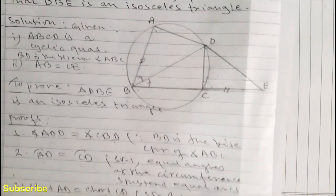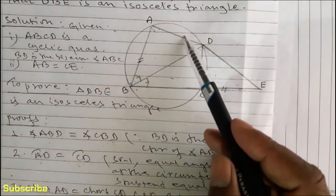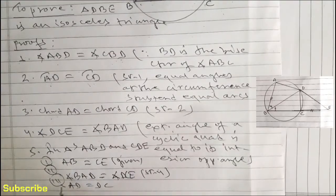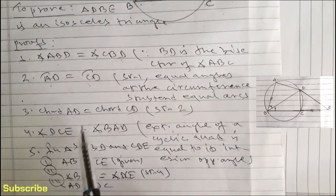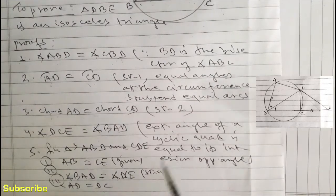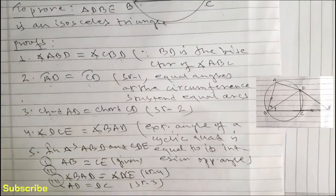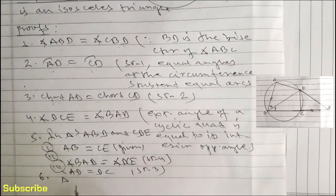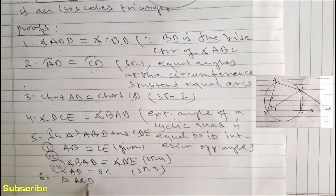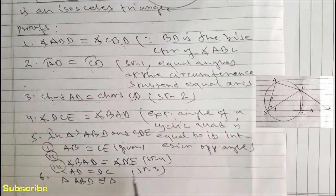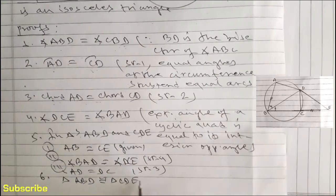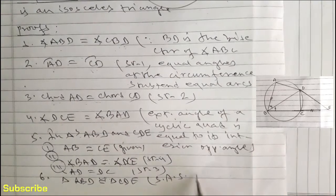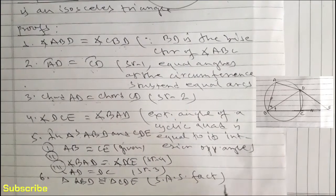In statement number 6, we get: triangle ABD is congruent to triangle CDE by the Side-Angle-Side (SAS) criterion of congruence of triangles.